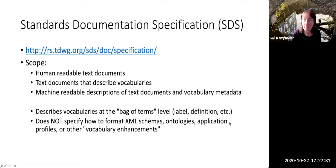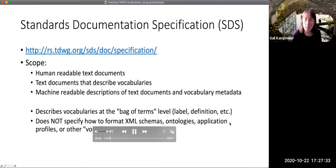The TDWG standards documentation specification is a standard which says how human-readable text documents should be formatted. It also describes how text documents describing vocabularies should be formatted, and how machine-readable descriptions of text documents and vocabulary metadata should be structured. It describes vocabularies at the bag of terms level, which includes labels and definitions, but does not specify more complex things like how XML schemas should be formed, or about ontologies or application profiles.